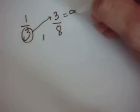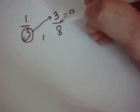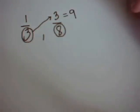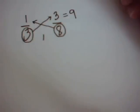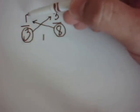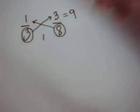3 multiplied by 3, this equals 9. Now you're going to get the other denominator, which is the 8, and you're going to go across and multiply it by the numerator, which is the 1. 8 times 1, this is going to equal 8.